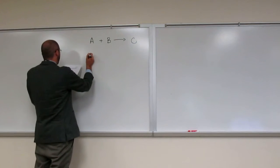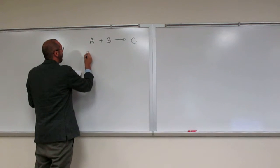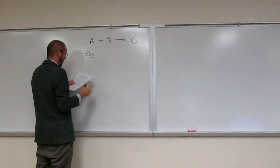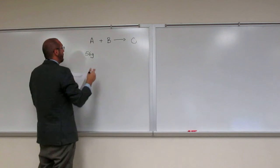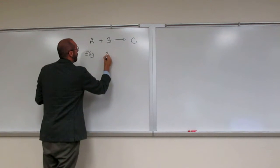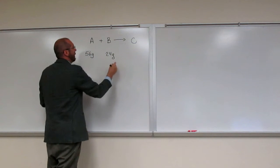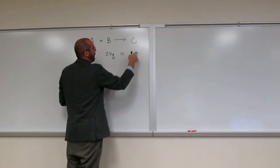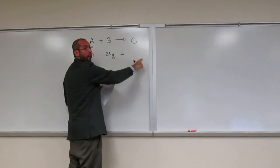So it gives us the mass of iron at 56 grams and the mass of oxygen at 24 grams. And it's wondering what is the mass here.